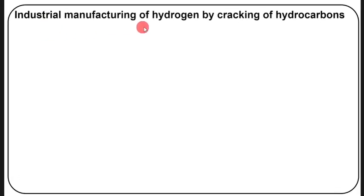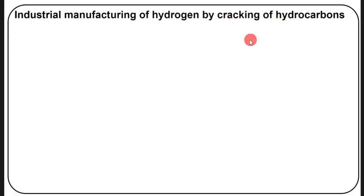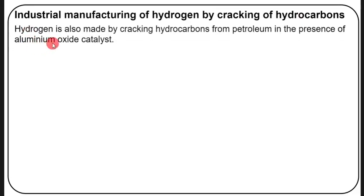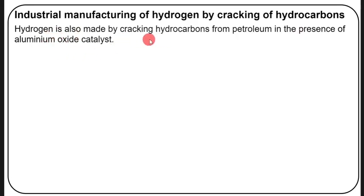Now let's look at the industrial manufacturing of hydrogen by cracking of hydrocarbons. Cracking is the breaking down of long-chain hydrocarbons into shorter, simpler hydrocarbons. Hydrogen is also made by cracking hydrocarbons from petroleum in the presence of an aluminum oxide catalyst.